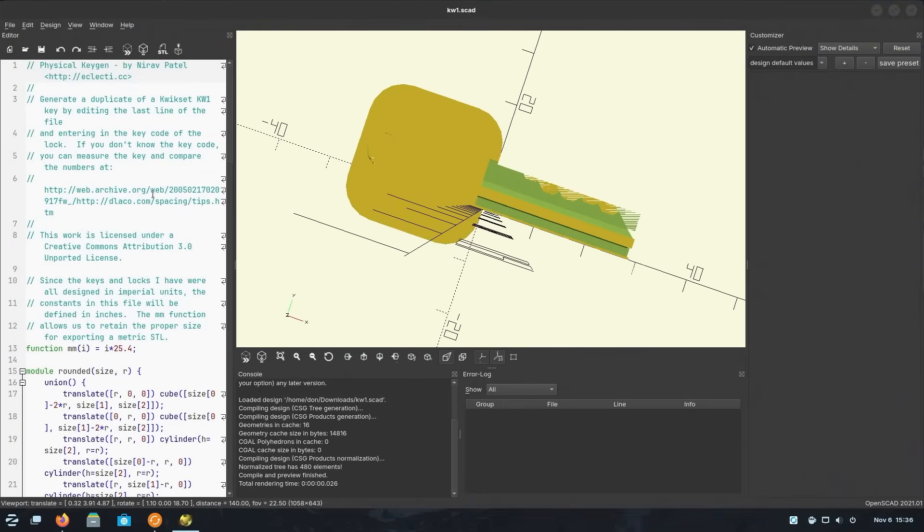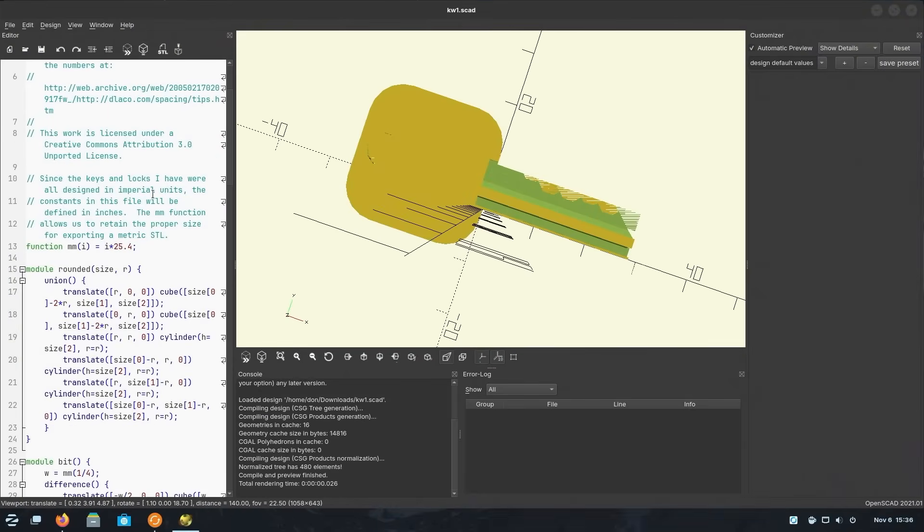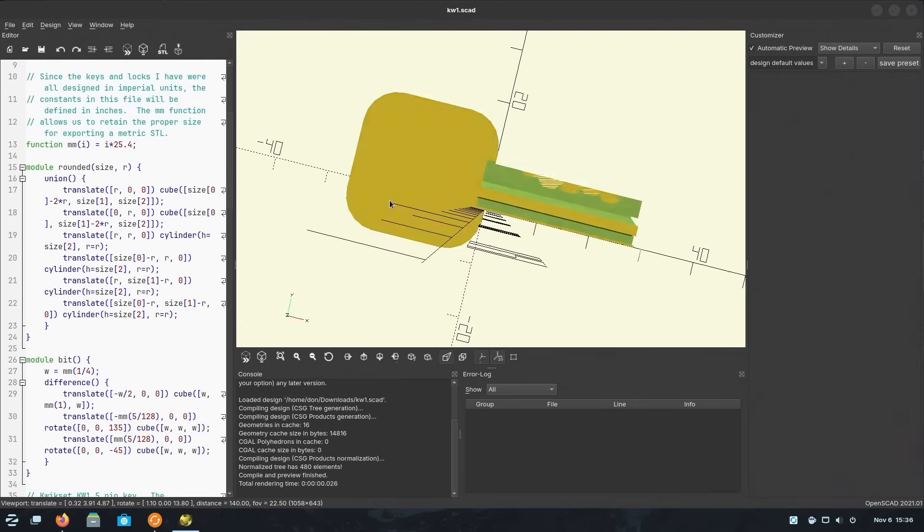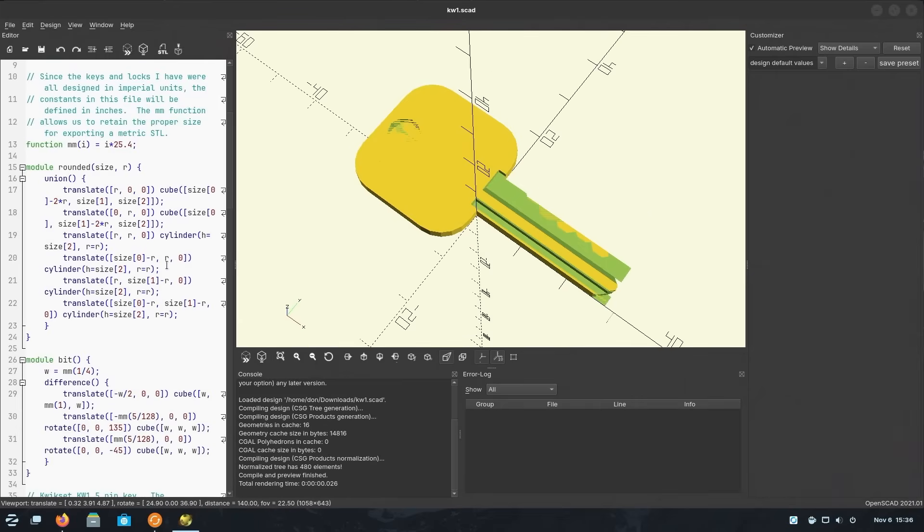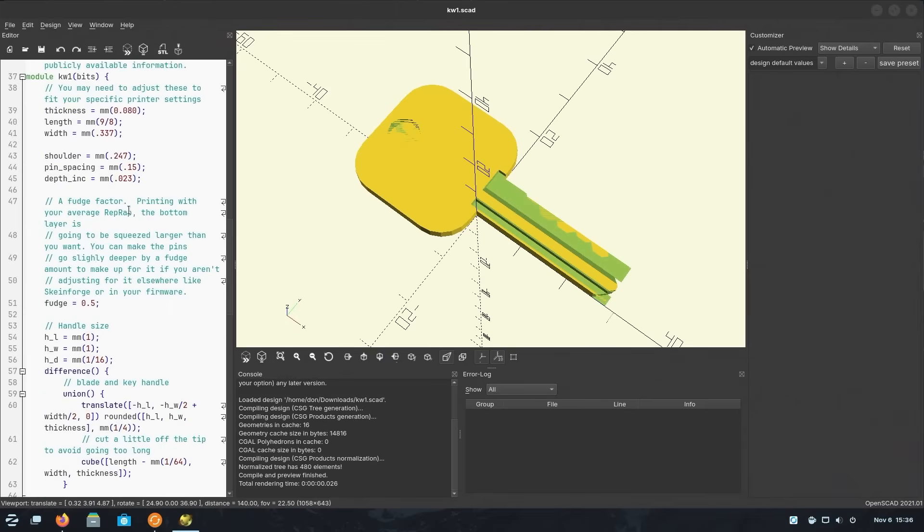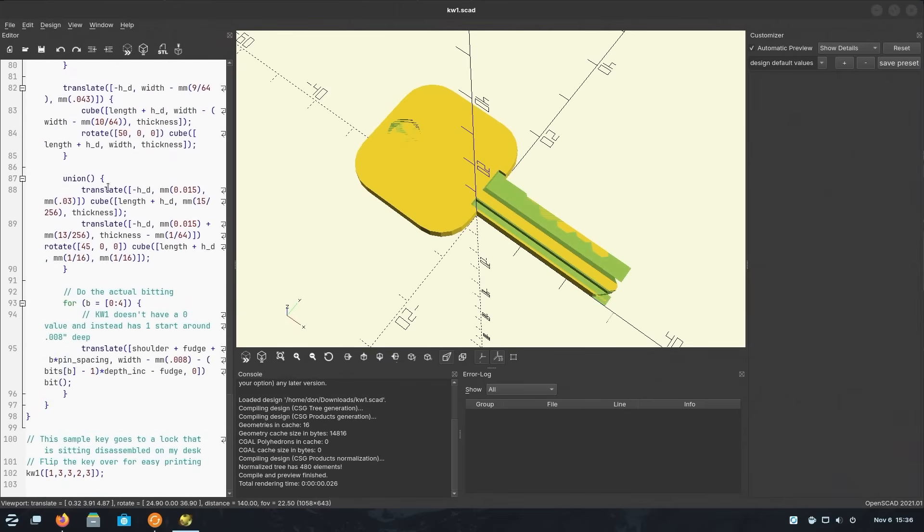Now, this is a programmer's version of CAD, so if you are very good at programming, you could use this. I've actually used this for quite some time before I learned how to use FreeCAD, because it was easier for me to understand how to translate stuff, or add stuff, or rotate stuff using this. Anyway, if you head all the way to the bottom, there's these five numbers, which is the key code that we need.